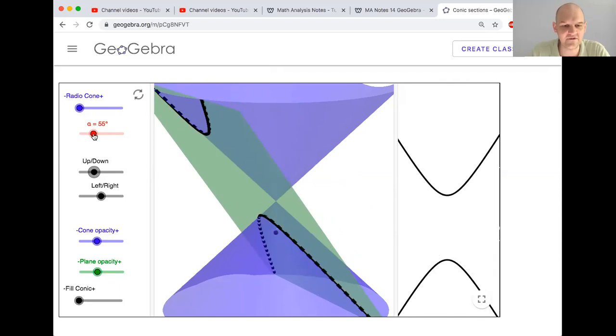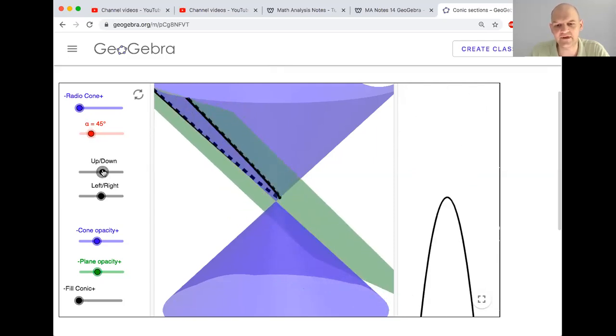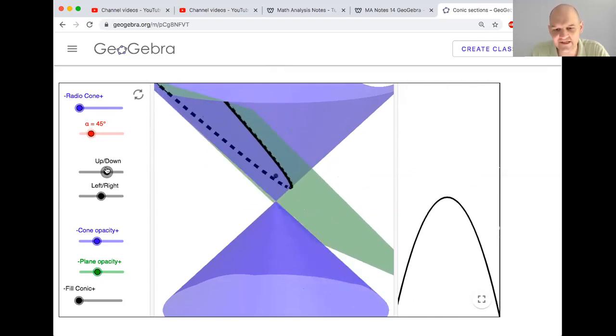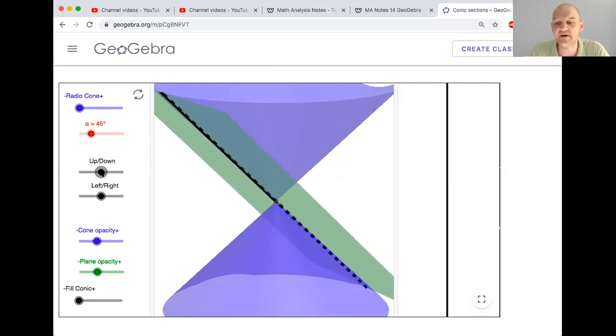The other ones you're either intersect, so let me go back to 45, you're either intersecting the top cone or the bottom cone, but not both. There's one instance where you're intersecting both. Let me see if I can get it again. There you get a line. So another possibility is a line. We have a circle, an ellipse, a parabola, a hyperbola, a line.